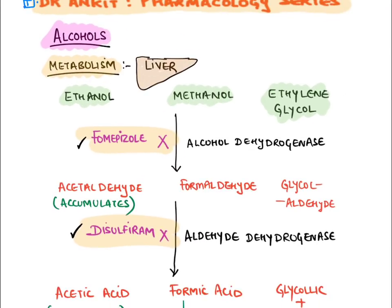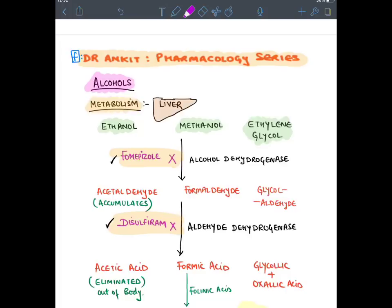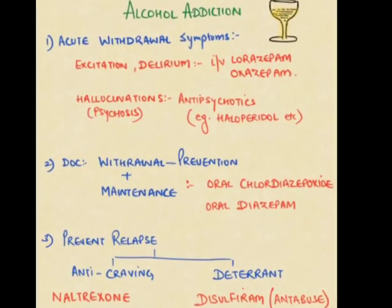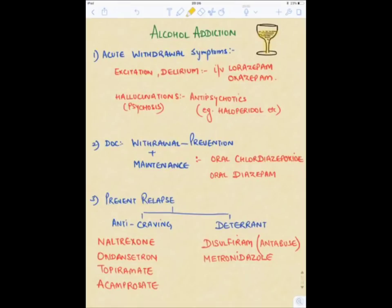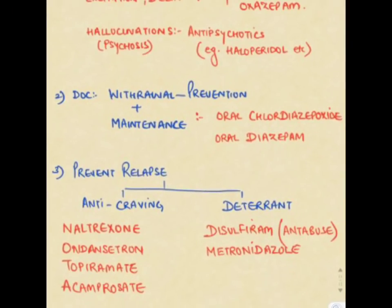Disulfiram is an aldehyde dehydrogenase inhibitor given for ethanol de-addiction. In acute alcohol withdrawal with delirium tremens, give IV benzodiazepine (diazepam, lorazepam, oxazepam); for hallucinations or Korsakoff's psychosis, give antipsychotic and thiamine (vitamin B1). Drug of choice for alcohol withdrawal is oral chlordiazepoxide (if not available, diazepam). To prevent relapse, give anti-craving drugs — naltrexone, ondansetron, topiramate, acamprosate — and deterrents. Naltrexone and acamprosate combination is approved.